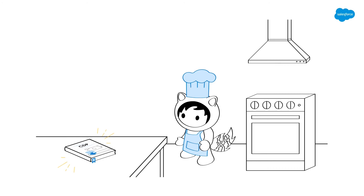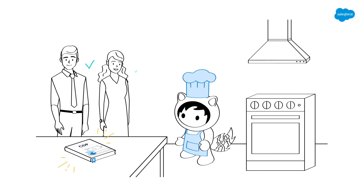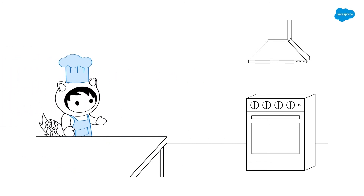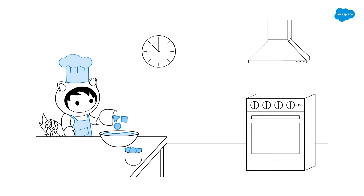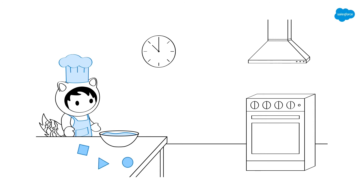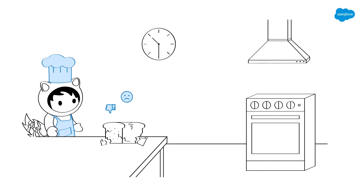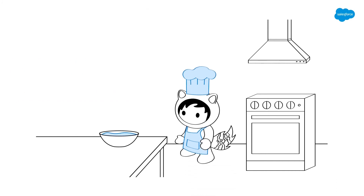Over time, you'll continue to add ingredients to the mix where necessary — additional cups of data to enrich your batches or keep your recipe fresh. If you don't continue to add and evolve the ingredients as time passes, you'll end up with a stale foundation and the end results will taste a little bit off.